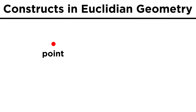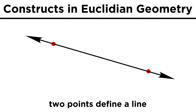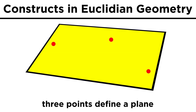Another linearity we can identify is that a point is just a point, but any two points can define a line, since there is only one line that contains both of these points. Extrapolating further, any three points that aren't all collinear can define a plane, since there is only one plane that contains all three of these points.